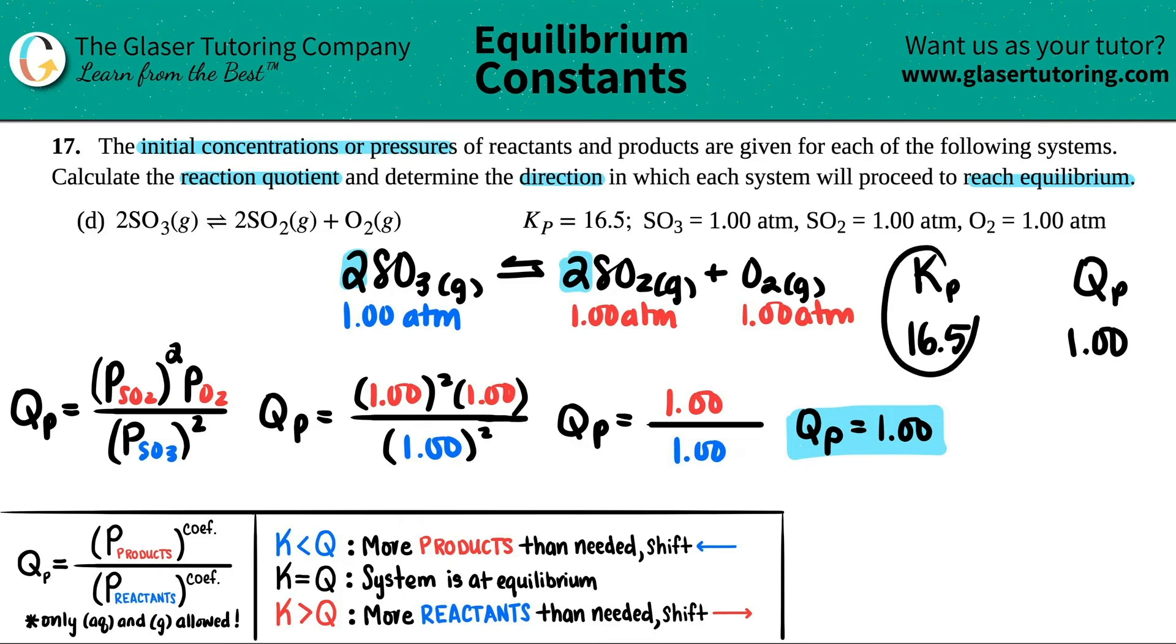Remember what we said—what a K value is when it's greater than one? 16 is greater than one. That means that we're favoring the product side—we need to make a lot of products. But where are we? Are we close to 16? No, we're only at one. So it looks like the Kp is larger than the Q.